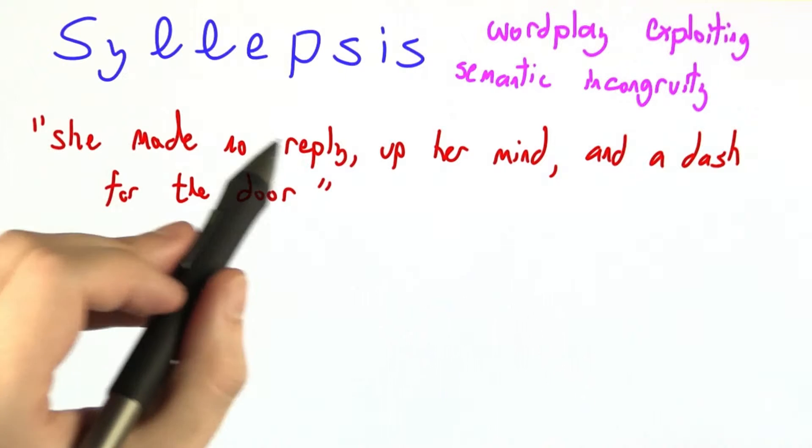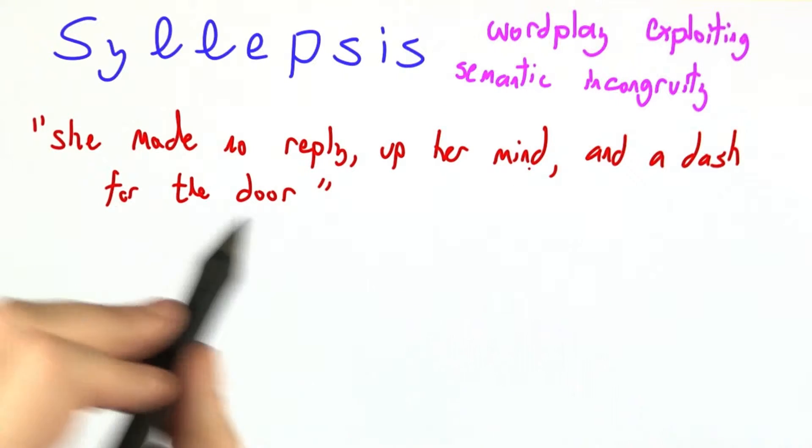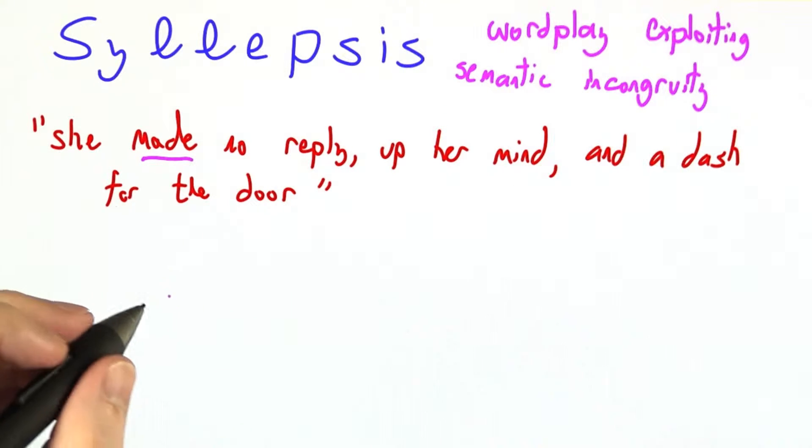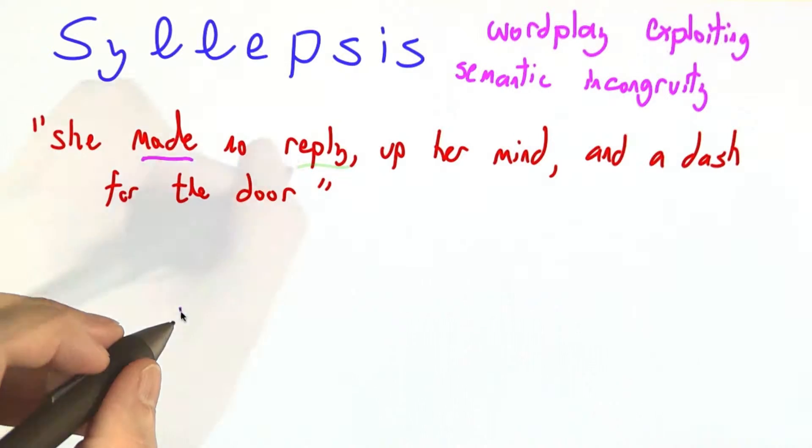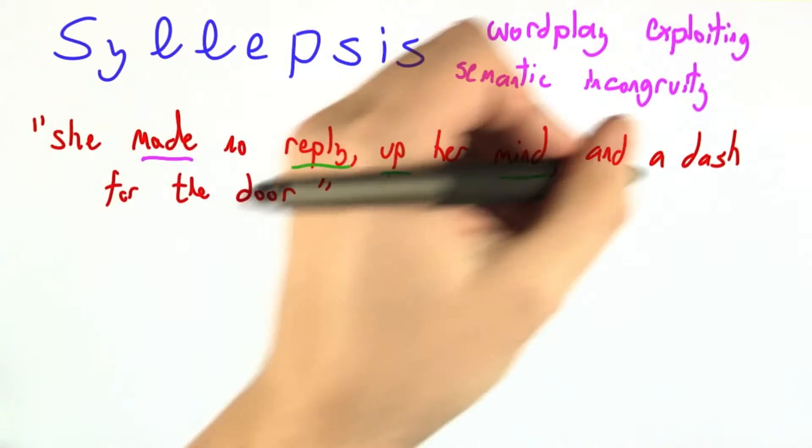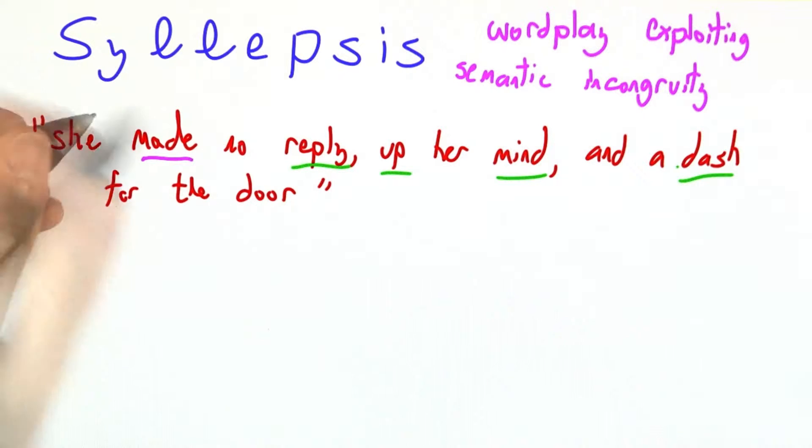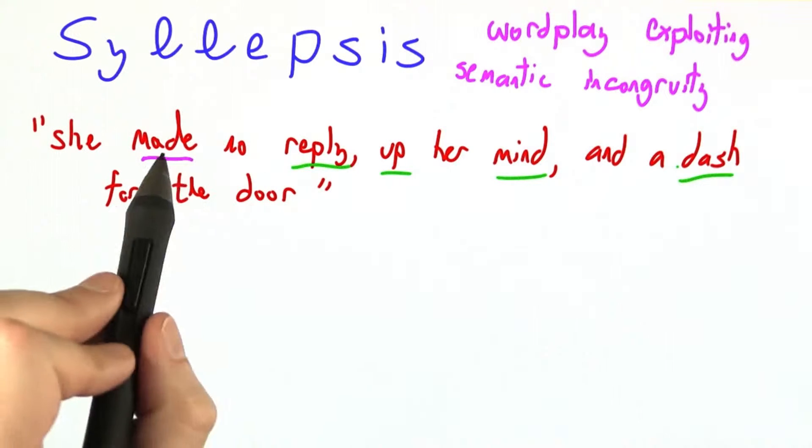In this fragment, she made no reply, up her mind, and a dash for the door. Made is being applied to three different things. Replies, make up a mind, and make a dash for some location. And it means something slightly different in each of these.